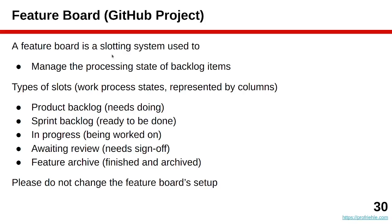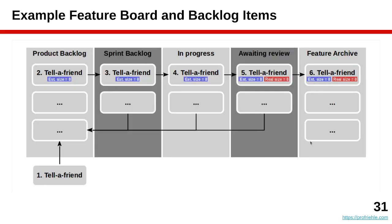The feature board is a slotting system with multiple columns, each representing the processing state of work that needs doing — called backlog items in Scrum. The columns are: product backlog, sprint backlog, in progress, awaiting review, and feature archive — left to right. These are the stages of fulfilling one particular backlog item like a feature request. To the left is the product backlog, a long list of features and requirements to be implemented.